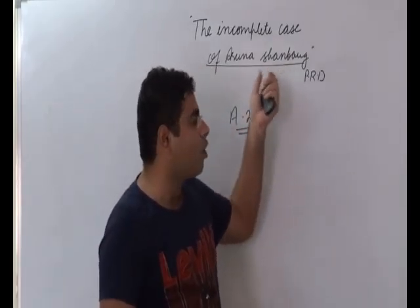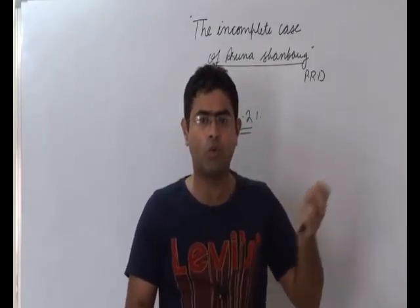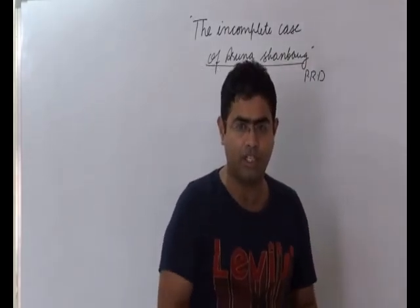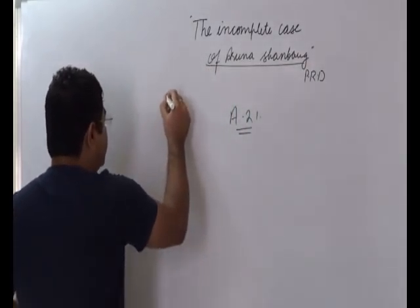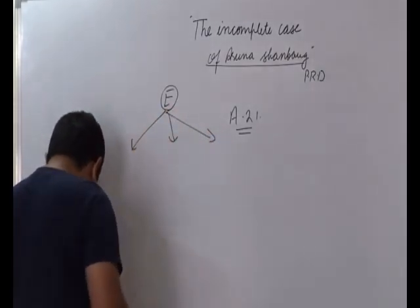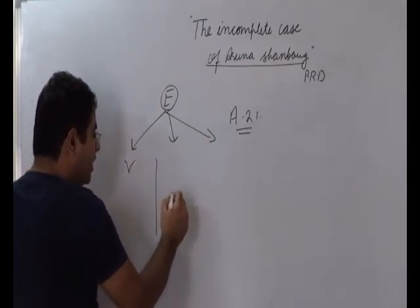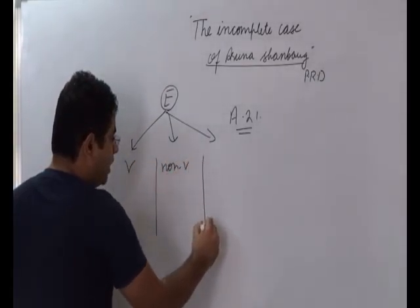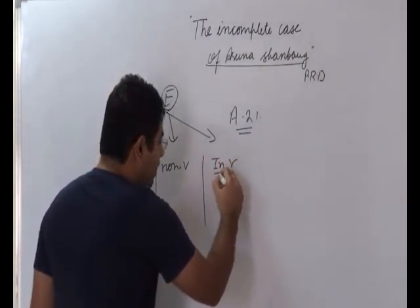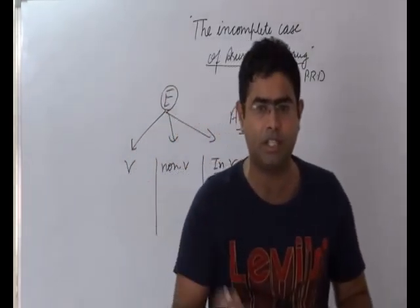This has been decided by the judiciary in the case of Aruna Shanbaug, but before we understand that, we need to understand about the various types of euthanasia. As far as euthanasia is concerned, we can broadly divide this into three types: voluntary euthanasia, non-voluntary euthanasia, and involuntary euthanasia.